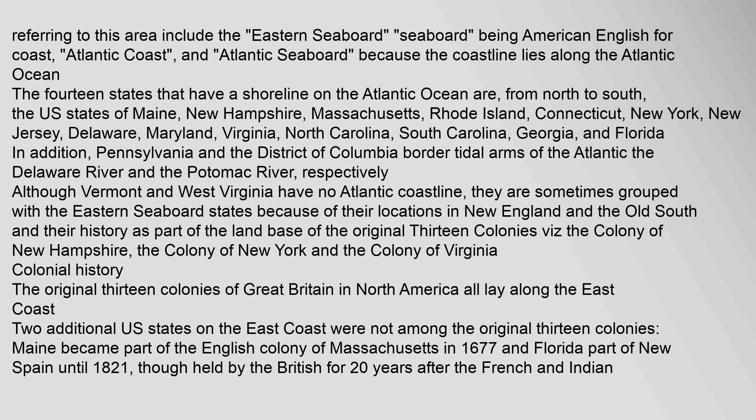The 14 states that have a shoreline on the Atlantic Ocean are, from north to south, the U.S. states of Maine, New Hampshire, Massachusetts, Rhode Island, Connecticut, New York, New Jersey, Delaware, Maryland, Virginia, North Carolina, South Carolina, Georgia, and Florida.